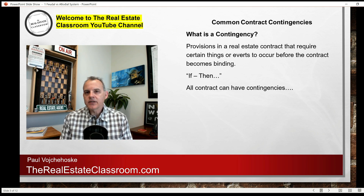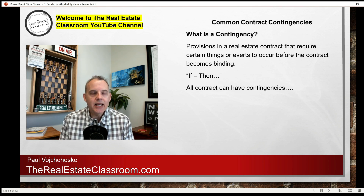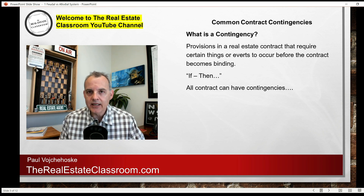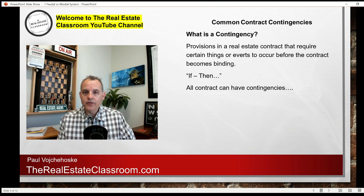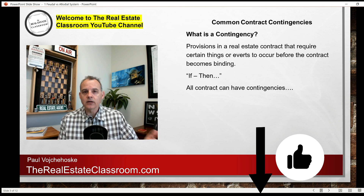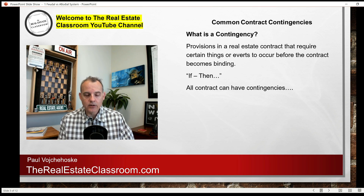In today's real estate exam prep video, I'm going to discuss what's called common contract contingencies. Now understand that any contract, whether it's real estate or otherwise, can have contingencies in the contract. They are provisions that are added into the contract and the parties have to agree to those contingencies. In real estate, the buyer may put certain contingencies in that contract and then the buyer and seller need to agree to it. A tenant may put a certain contingency in a lease agreement and the landlord and the tenant have to agree to it.